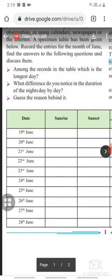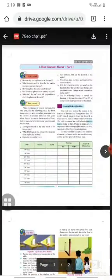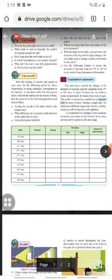Here is a table for you. You are given the date from 19th June to 28th June, columns for sunrise, sunset, duration of day and night, and source kya hai—what was the information source. You have to note the time of the sunrise and sunset. For example, if we consider 19th June, note the time of sunrise on 19th June, time of sunset, duration kya tha of day or night, and the source of information. It could be direct observation, using calendar, by newspaper, or the Internet. A specimen is given. Now record the entries for the month of June.